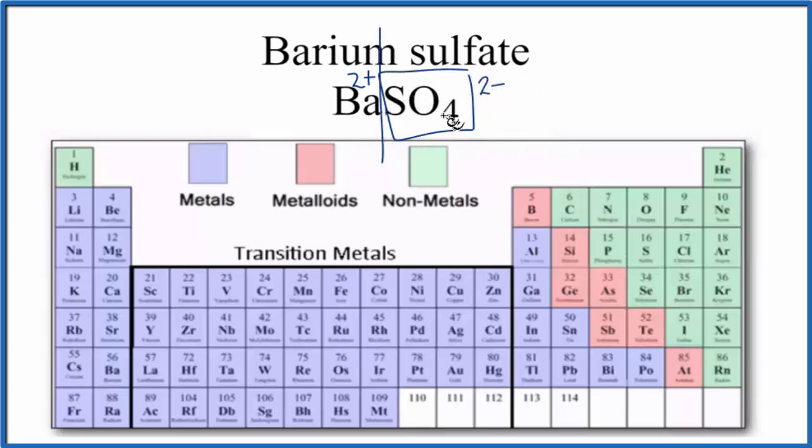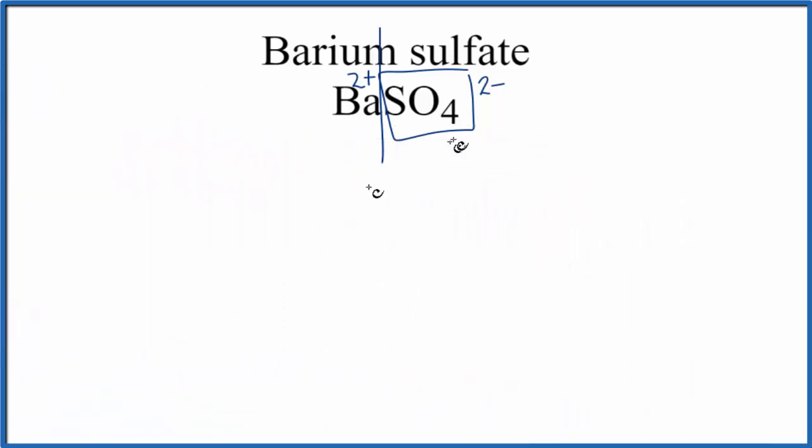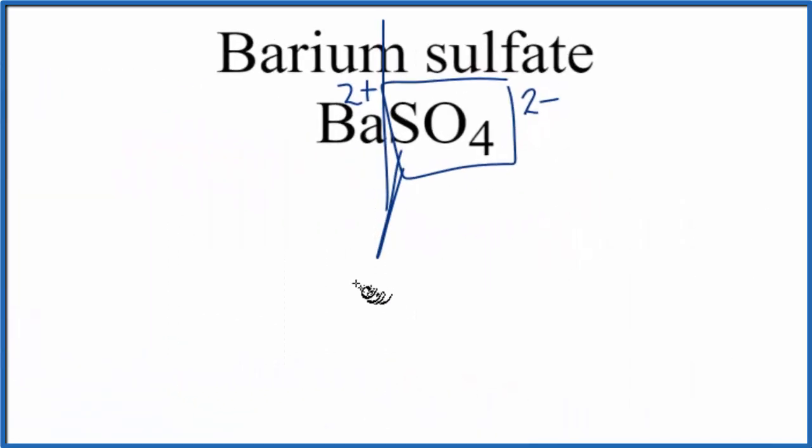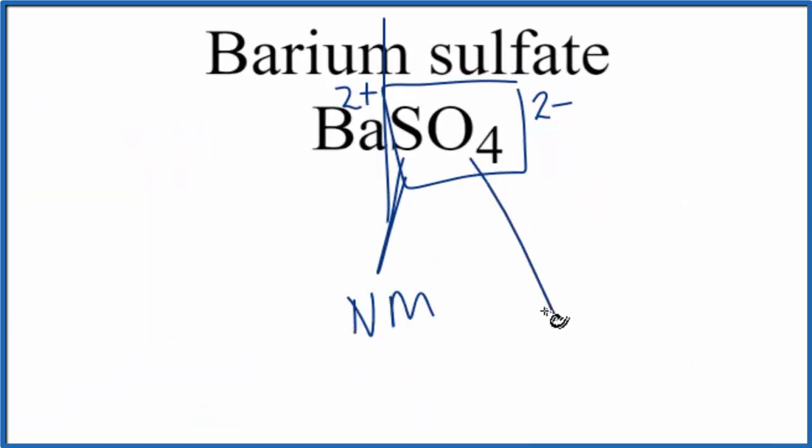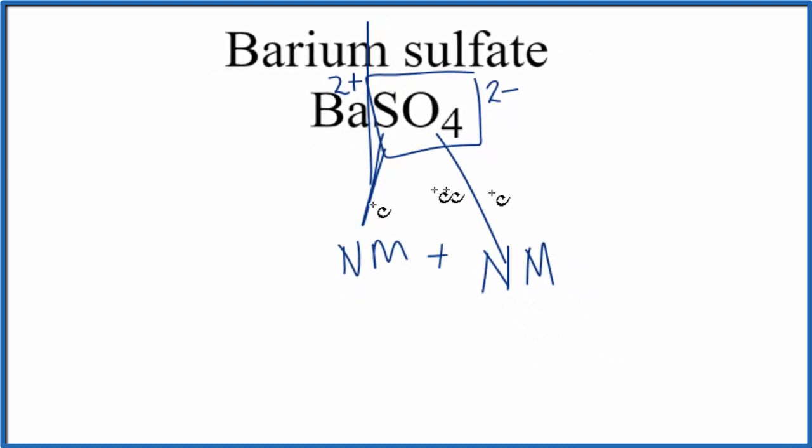Let's talk about the sulfate ion briefly. So we said sulfur, that was a nonmetal, and oxygen, that was also a nonmetal. When we have a nonmetal bonded to nonmetals, that's a covalent bond. Sometimes that's also called a molecular bond, same thing. So the bonds between the sulfur and the oxygen, those are covalent bonds.